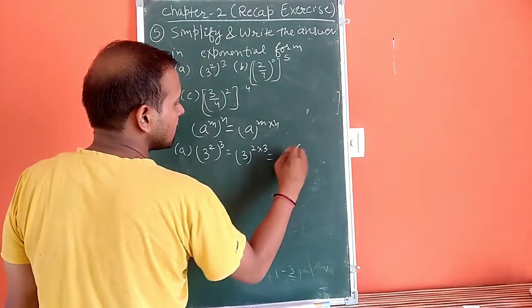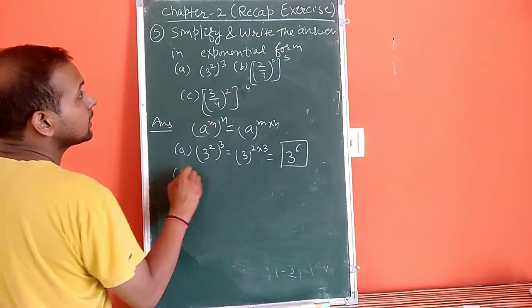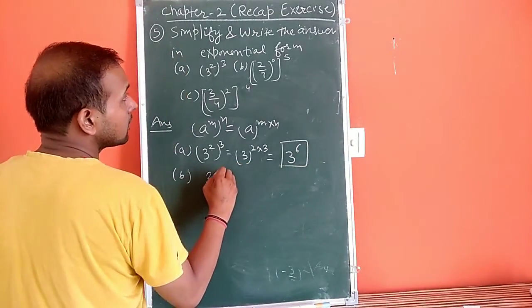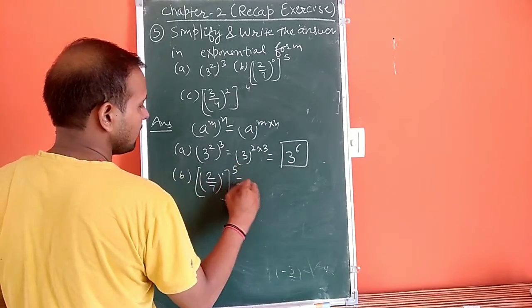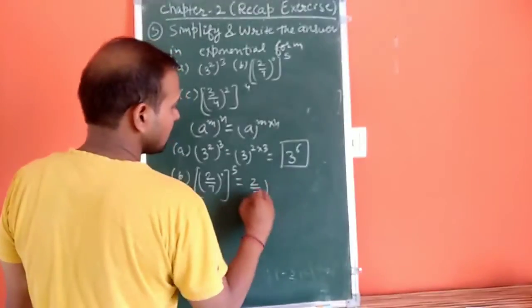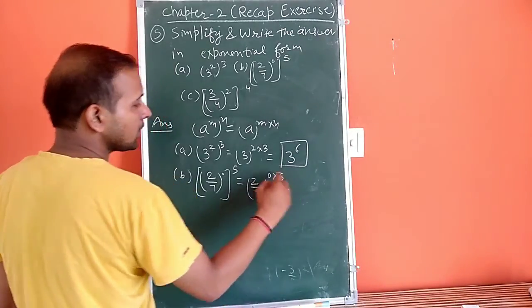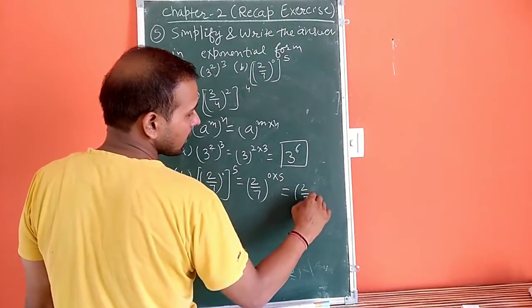This formula we have for part (b): (2/7) to the power 0, and then (2/7) to the power 5. So it will become (2/7) to the power 0 times 5, which is 0 times 5. So (2/7) to the power 0.